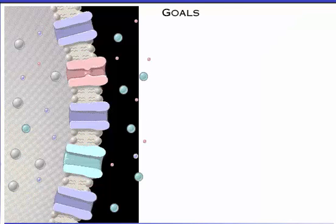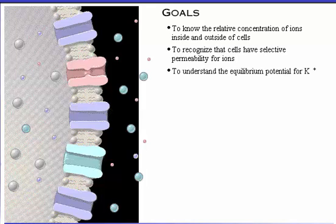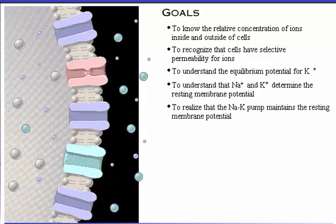Your goals for learning are to know the relative concentration of ions inside and outside of cells, to recognize that cells have selective permeability for ions, to understand the equilibrium potential for potassium, to understand that sodium and potassium determine the resting membrane potential, and to realize that the sodium-potassium pump maintains the resting membrane potential.